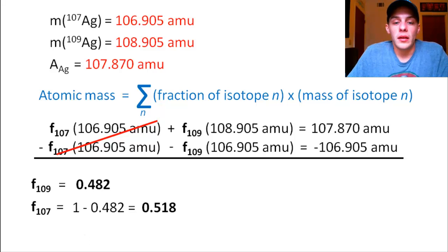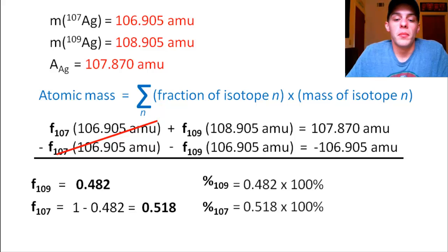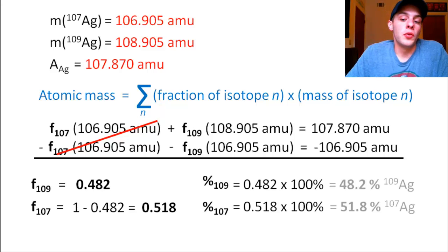And if you want to find these fractions in terms of percent abundances, all you have to do is just multiply those fractions by 100% and that will give you the percent abundances. So this means we have 48.2% silver-109 and 51.8% silver-107.